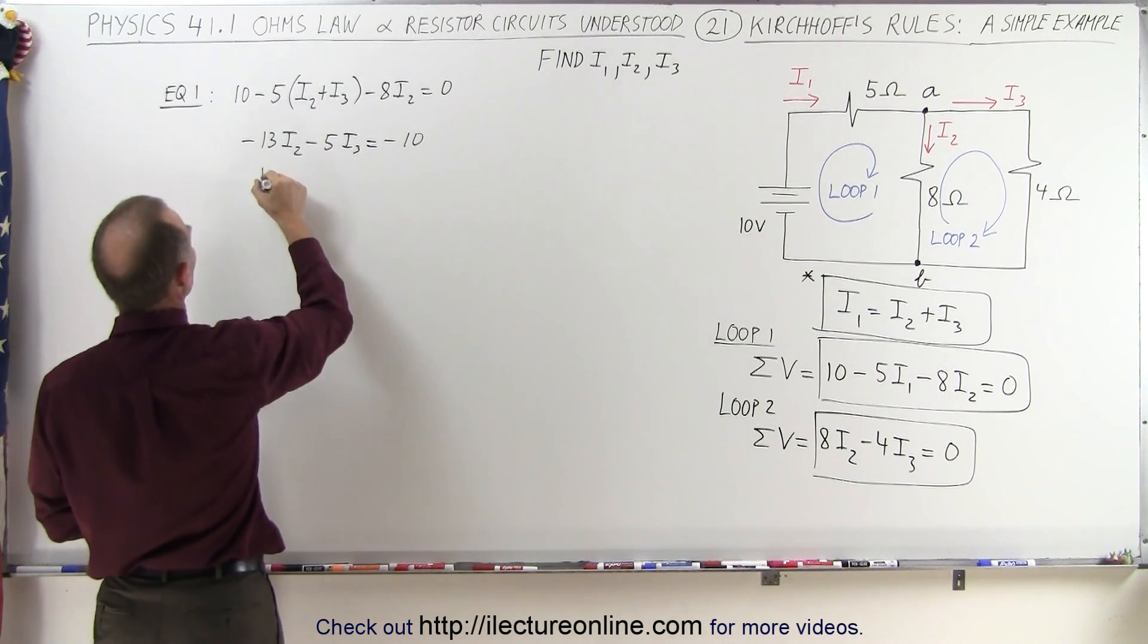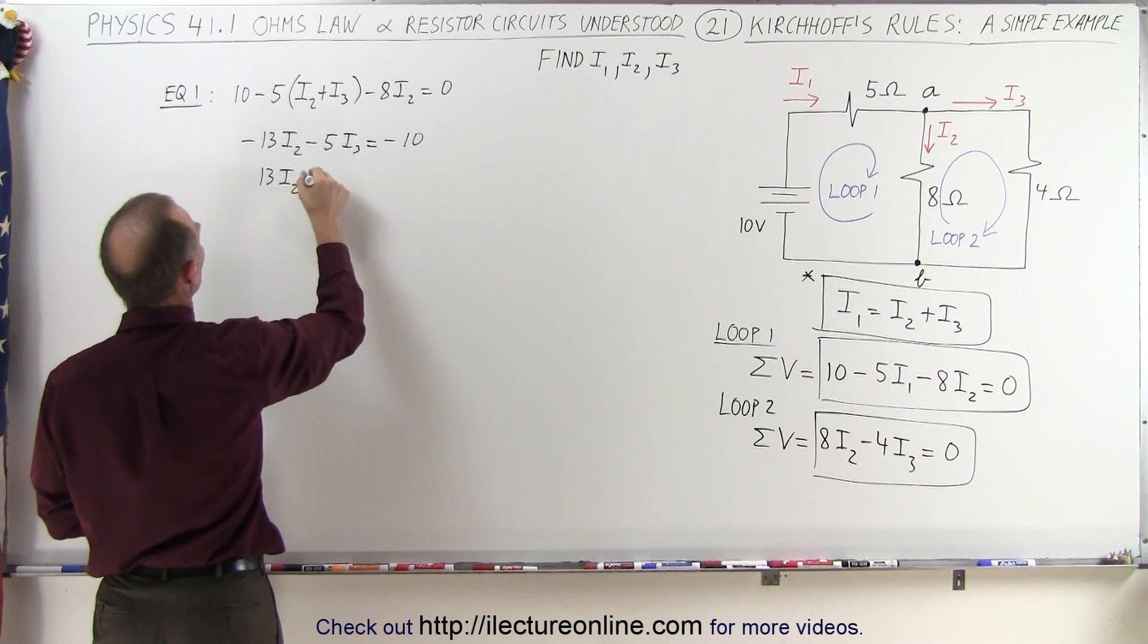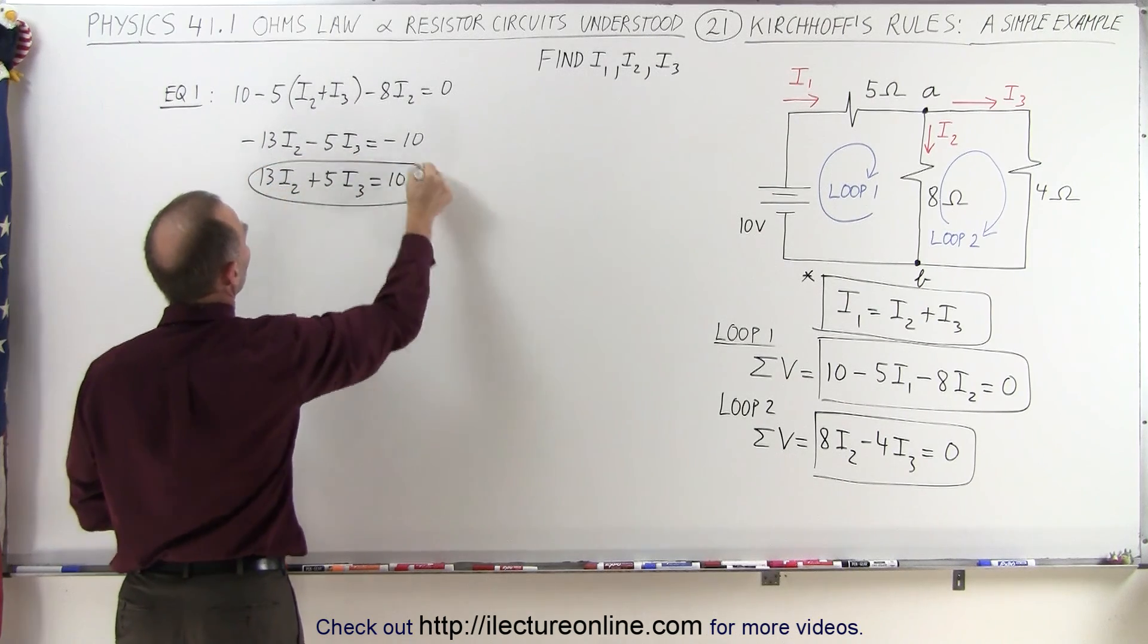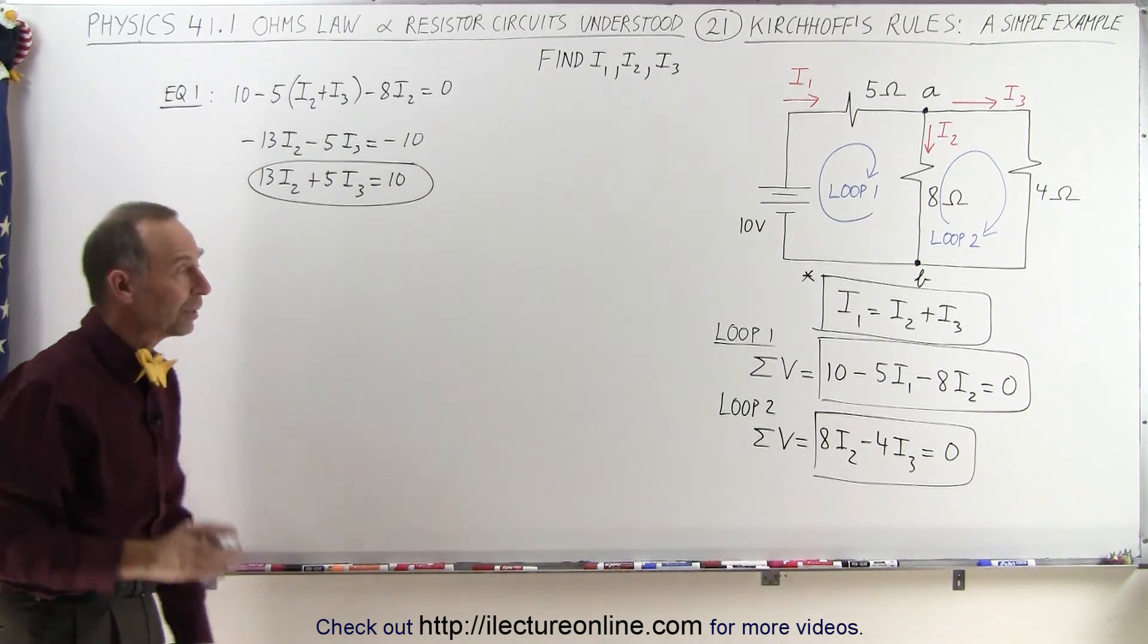Or simplified, we get 13I2 plus 5I3 is equal to 10. So there's our first equation that only has I2 and I3 in it.